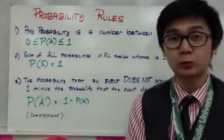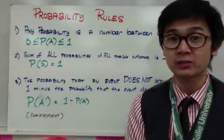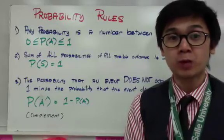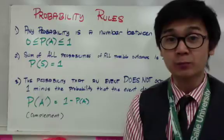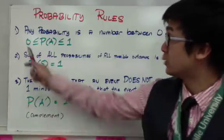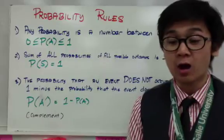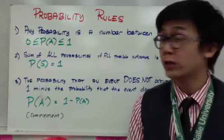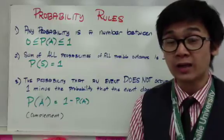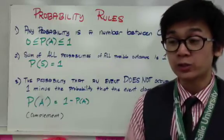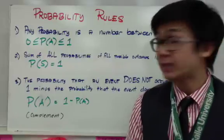Here are some of the probability rules or probability properties used in this chapter. The first property is that the result of any probability question will be between 0 and 1. The range of values when answering a probability question will always be between 0 and 1. Anything lower than 0 or higher than 1 means your probability result is an error.